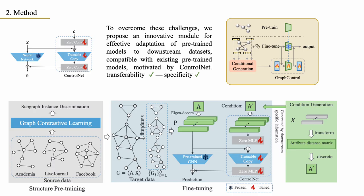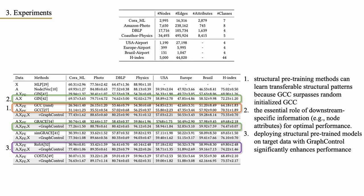To overcome these challenges, we propose an innovative module for effective adaptation of pre-trained models to downstream datasets, compatible with existing pre-trained models. Specifically, we utilize universal structural pre-trained models and incorporate unique features of downstream data as input conditions. Drawing inspiration from ControlNet, we feed structural information into the frozen pre-trained model and well-designed conditions into the trainable copy. These components are linked through zero MLPs, gradually expanding parameters from zero to incorporate valuable downstream attributes and safeguard against detrimental noise during fine-tuning.